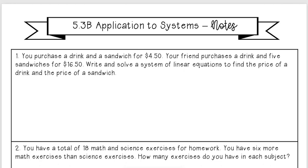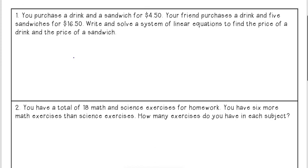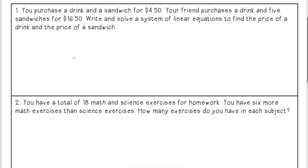Here we're going to do some word problems where we're going to be solving systems. For this first question it says you purchase a drink and a sandwich for $4.50. Your friend purchases a drink and five sandwiches for $16.50.